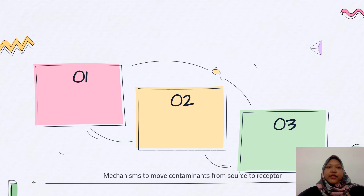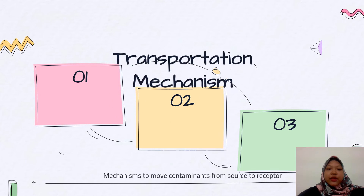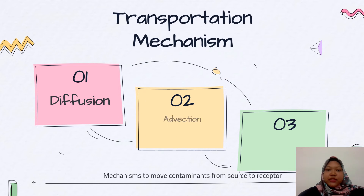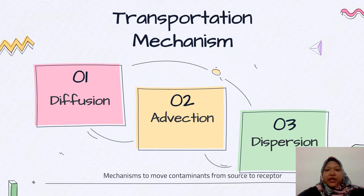For this biochemical process to happen, there will be a transformation mechanism. The three mechanisms are: diffusion, advection, and also dispersion.